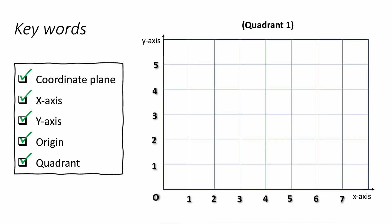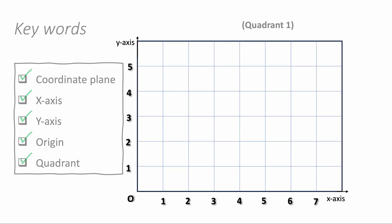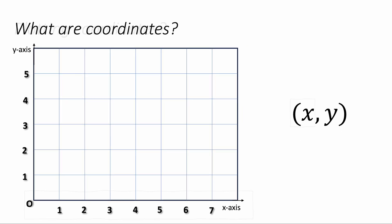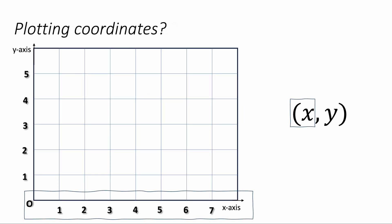Let's see how we will plot some coordinates on the coordinate plane. We write coordinates in brackets like this with a comma in the middle. The first number represents the x-coordinate. The second number represents the y-coordinate. So the x and the y.